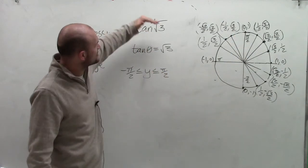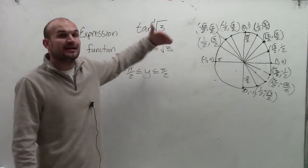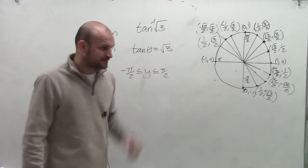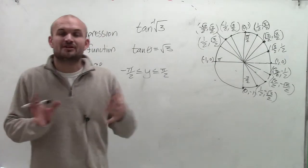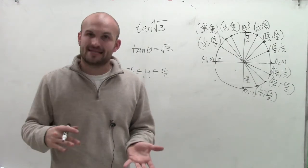I need to determine what angle, when taking the tangent of it, will provide square root of 3. Remember, the tangent of an angle is the ratio of the y coordinate divided by the x coordinate.